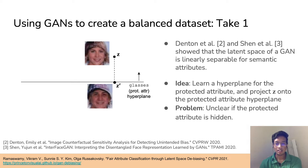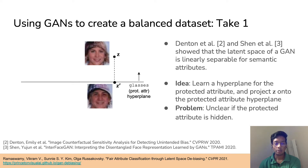This is our first idea. Using a linear SVM classifier, we can learn the hyperplane for glasses. Given a latent vector Z, we can project it onto the hyperplane, thereby theoretically removing any visual signal from glasses. However, it's unclear if this actually implies that the predictor attribute is hidden.